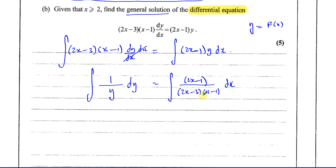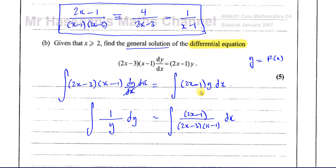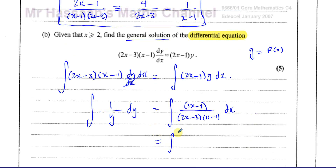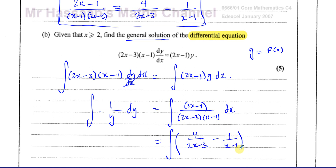Now we are ready to integrate. The right-hand side can't be integrated as it stands — however, that's exactly the same expression we split into partial fractions in part A. So I rewrite it as the integral of [4 over (2x minus 3) minus 1 over (x minus 1)] dx. Don't forget the dx and the brackets — the whole expression is integrated with respect to x.